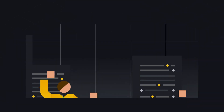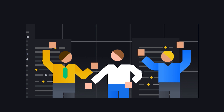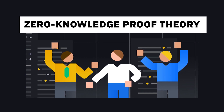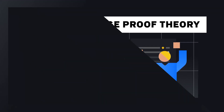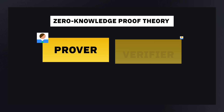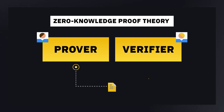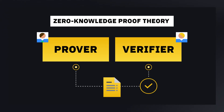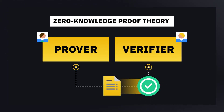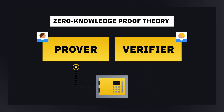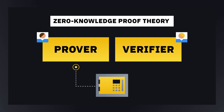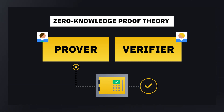In the 1980s, three academics from MIT invented the zero-knowledge proof theory. It's a way for two parties — a prover and a verifier — to validate something is true without revealing any information to each other, such as why it's true. For example, if the prover wanted to convince the verifier he knew a code to a locked safe, the prover could enter the code and unlock the safe, but not open it.